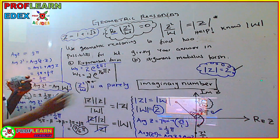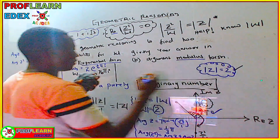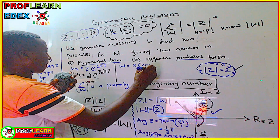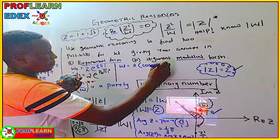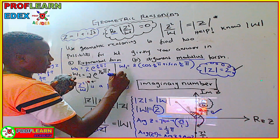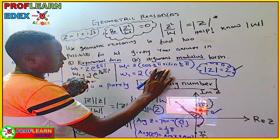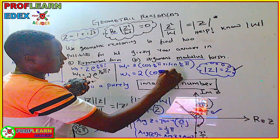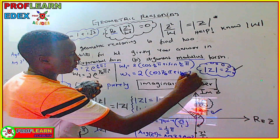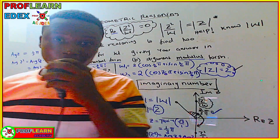In modulus-argument form: w₁ = 2(cos(π/6) + i·sin(π/6)) and w₂ = 2(cos(7π/6) + i·sin(7π/6)). That is how geometric reasoning is used to find complex numbers in problems of this type.